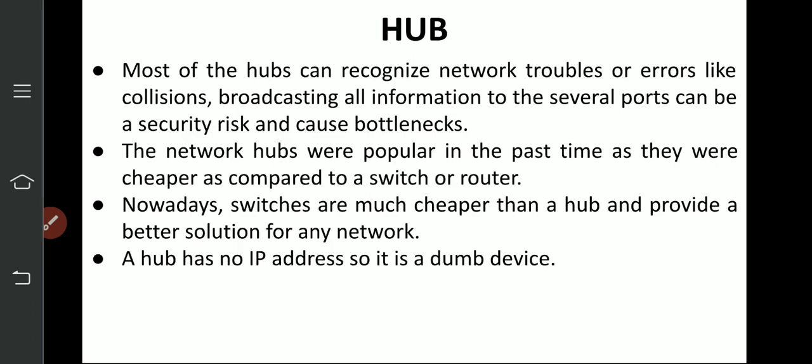A hub has no IP address, so it is a dumb device. It does not know which port belongs to which device. Because it has no IP address, it is called a dumb terminal. It has no solution for collision — when broadcast happens simultaneously, there can be information collision, security loss, and data loss. The solution for these problems lies with switch and router, which are now cheaper, so we use them instead of hub.